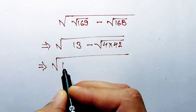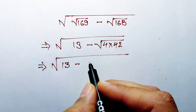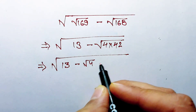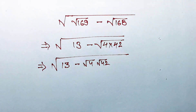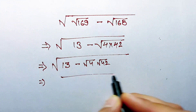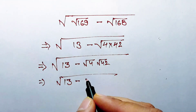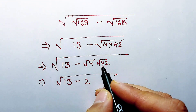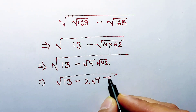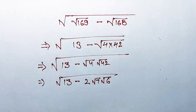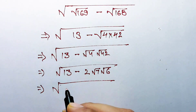Further solving, 13 minus the term can be written as square root of 4 multiplied by square root of 42. Now, square root of 4 is equal to 2, and square root of 42 can be written as square root of 7 multiplied by square root of 6.